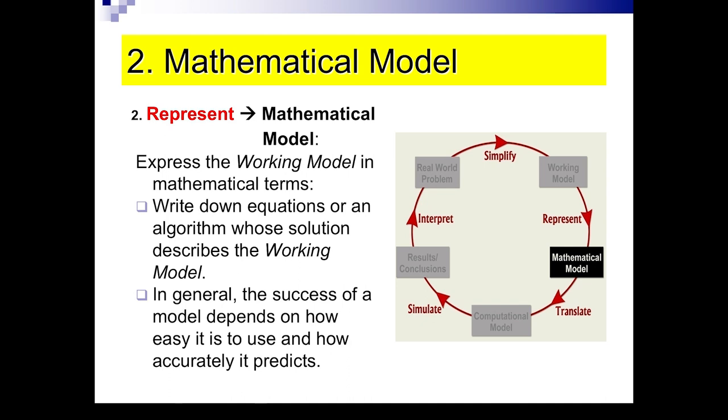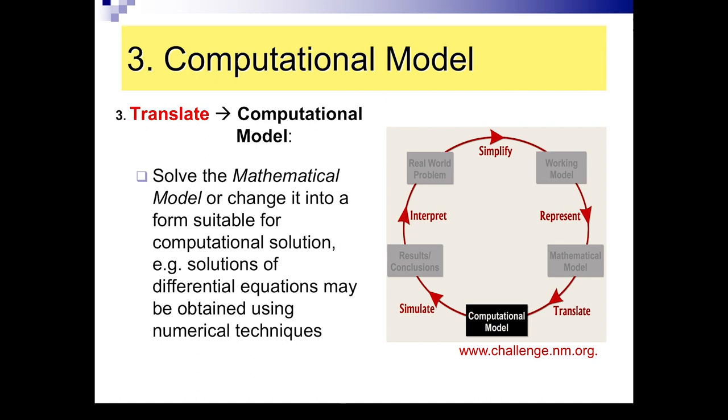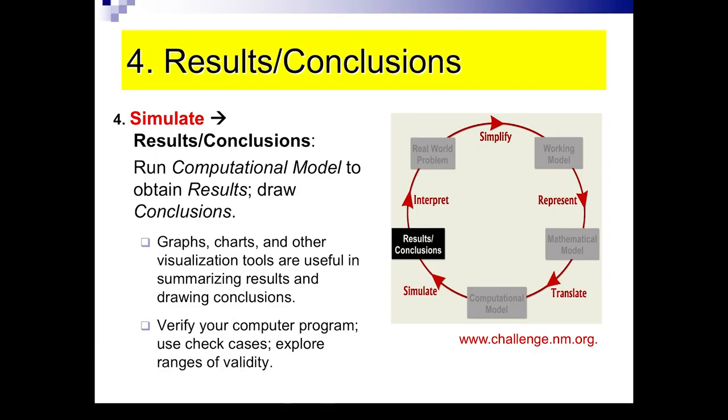In general, the success of a model depends on how easy it is used and how accurately it predicts. Once you have the mathematical model, the next step would be to even transform it into a computational model. Today, we have a lot of software that will provide algorithms to solve your mathematical model. It can be programming languages, it can be software that will provide your solutions. Once you've run and solved the computational model, you have to look at your results. How do you analyze your results? You have to compare them with old ones. You can prepare graphs or charts to visualize your results. You have to go back and look at your computer program. And you want to check if your program ran correctly.